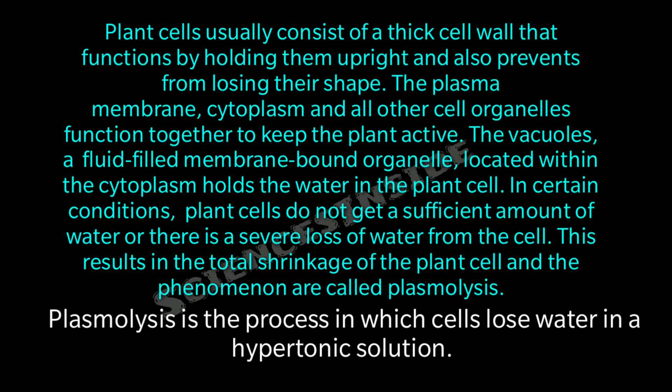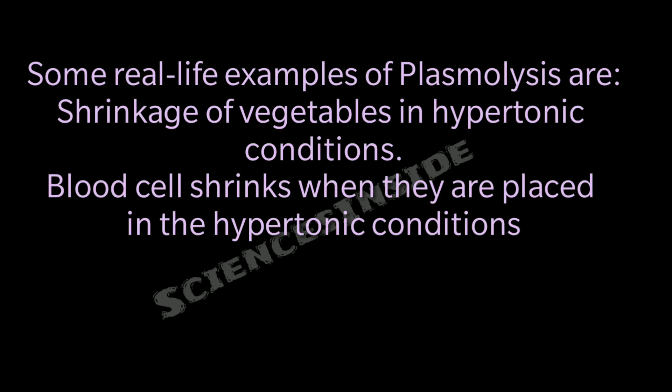In certain conditions, plant cells do not get a sufficient amount of water or there is severe loss of water from the cell. This results in total shrinkage of the plant cell and is called plasmolysis. Plasmolysis is the process in which cells lose water in a hypertonic solution. Examples include the shrinkage of vegetables in hypertonic solution and blood cells shrinking when placed in hypertonic conditions.